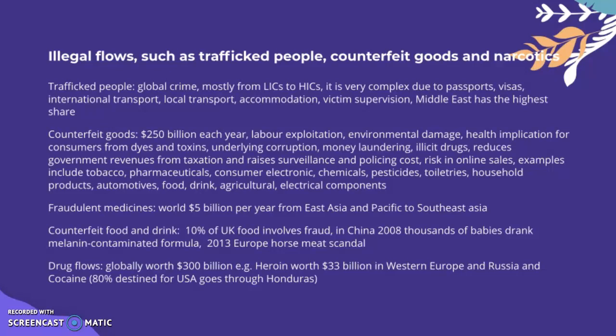This is part two because the video was too long. Environmental and health implications for consumers from diets and toxins, underlying corruption, money laundering, illicit drugs — these reduce government revenues from taxation and raise surveillance and policing costs. There's a risk in online sales.